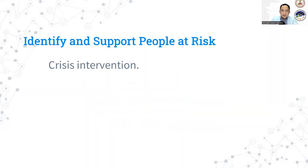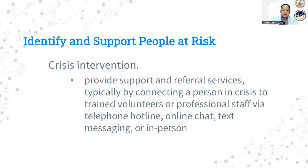Second is to identify and support people at risk. These approaches provide support and referral services typically by connecting a person in crisis or a friend or family member of someone at risk to a trained volunteer or professional staff via telephone hotline, online chat, text messaging, or in person. Crisis intervention approaches are intended to impact key risk factors for suicide, including feelings of depression, hopelessness, and subsequent mental health care utilization. Crisis interventions can put space or time between an individual who may be considering suicide and harmful behavior.